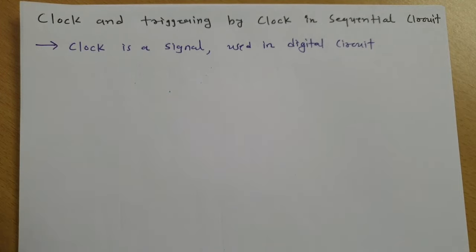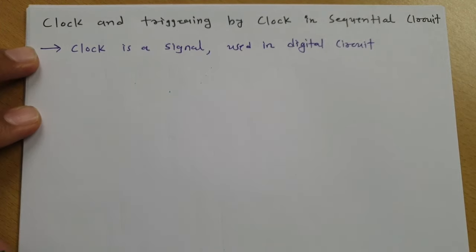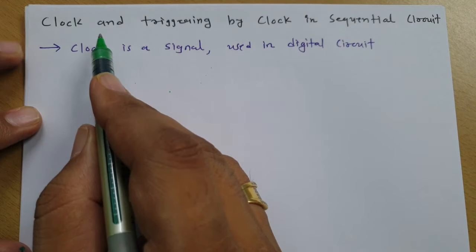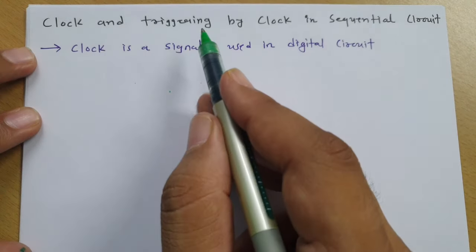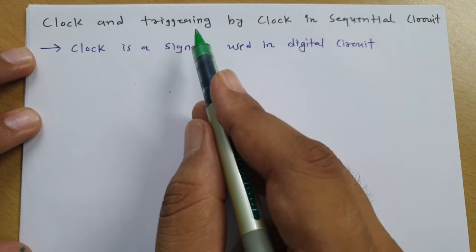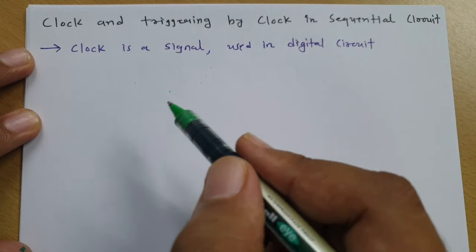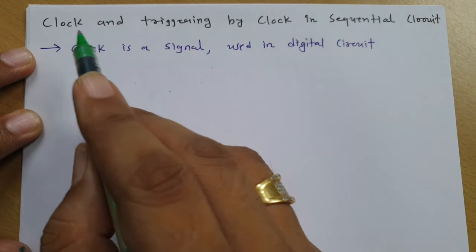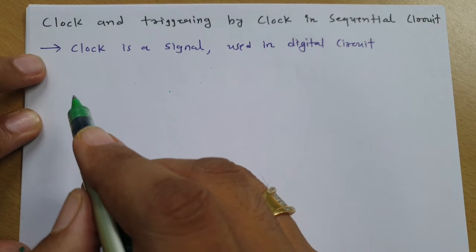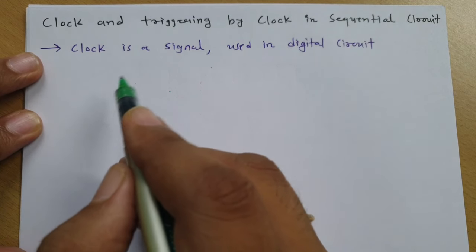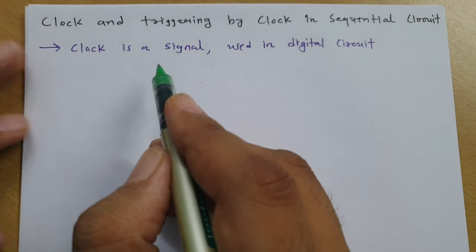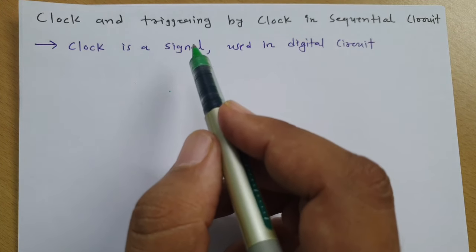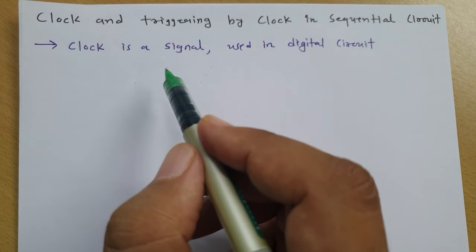Welcome to Digital Electronics Lecture Series. I, Professor Ritesh Dholakya, am going to explain what is a clock signal and how we use clock signal to have triggering of a sequential circuit. First I will explain what is a clock signal and what are the parameters associated with it, and then I will explain how we can provide triggering to a sequential circuit using a clock signal.